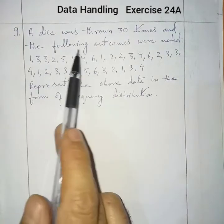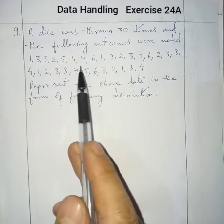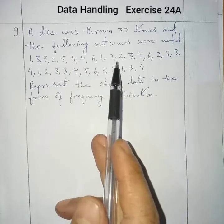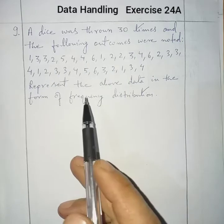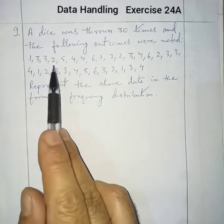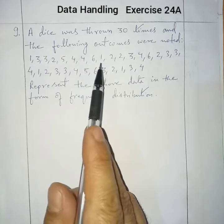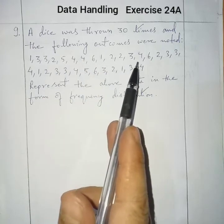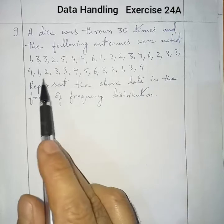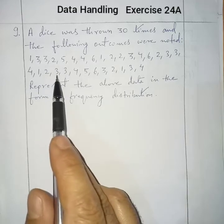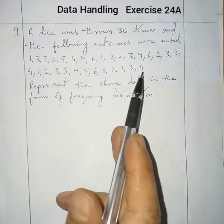A dice was thrown 30 times and the following outcomes were noted: 1, 3, 3, 2, 5, 4, 4, 6, 1, 2, 2, 3, 4, 6, 2, 3, 3, 4, 1, 2, 3, 3, 4, 5, 6, 3, 2, 1, 3, 4.